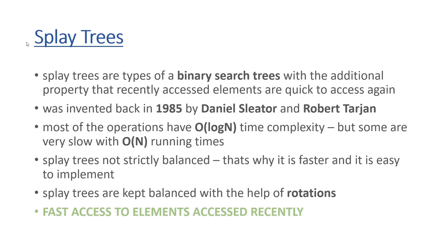Splay trees are not strictly balanced, and this is why it is faster to construct a splay tree. It is not going to be faster as far as search, insertion, and removal operations are concerned — it is faster to construct than, for example, an AVL tree. For an AVL tree, we have to make several rotations. Because splay trees are not strictly balanced, we make fewer rotations, and this is why it is faster to construct a splay tree and easier to implement.